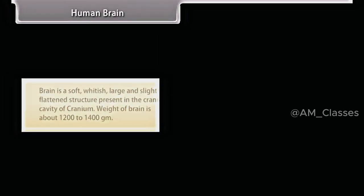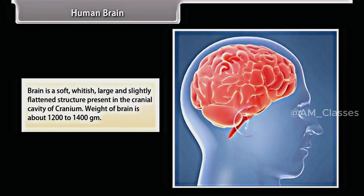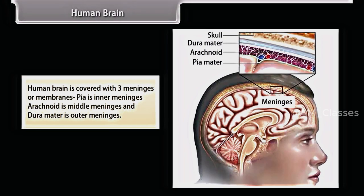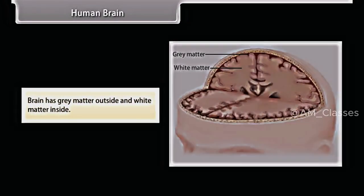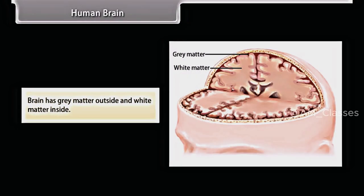The brain is a soft, whitish, large and slightly flattened structure present in the cranial cavity of the cranium. The weight of the brain is about 1200 to 1400 grams. The human brain is covered with three meninges or membranes: pia is the inner meninges, arachnoid is the middle meninges, and dura mater is the outer meninges. The space between membranes is filled with cerebrospinal fluid. The brain has grey matter outside and white matter inside.